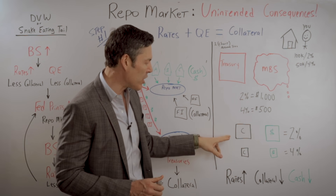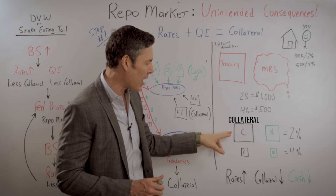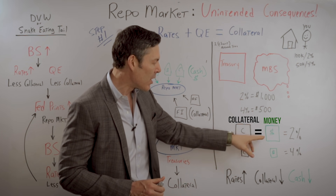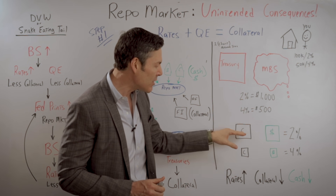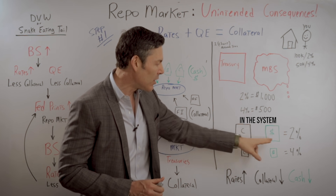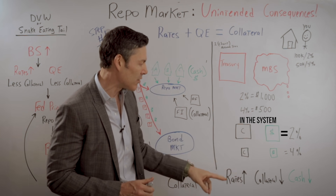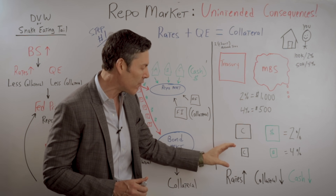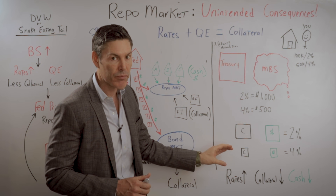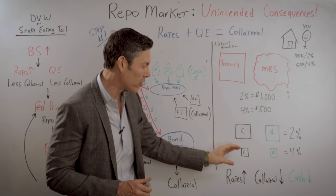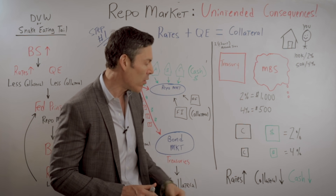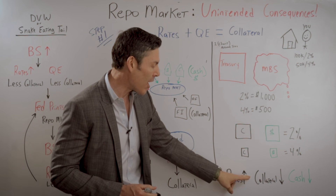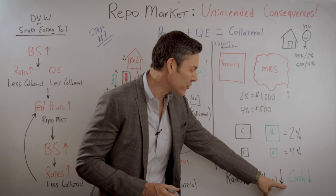So we've got this little equation: the amount of collateral is equal to the amount of money, and the amount of money and collateral in the system is equal to the interest rates. Therefore, if interest rates go up, the amount of collateral available — or the value of that collateral — goes down. Therefore, so does the amount of cash that's available. Rates go up, collateral goes down, cash goes down.